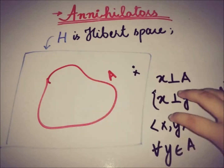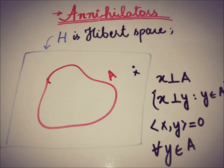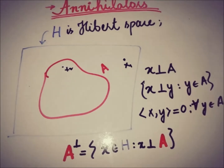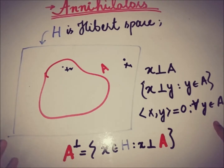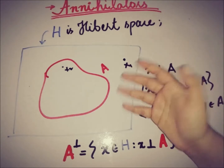The set of all vectors in H which are orthogonal to A — satisfying this property — is called the annihilator of A. We denote it by A with a perpendicular sign. This set contains all vectors perpendicular to the subset A, and there is no restriction that X must be from A — X only needs to be from H.